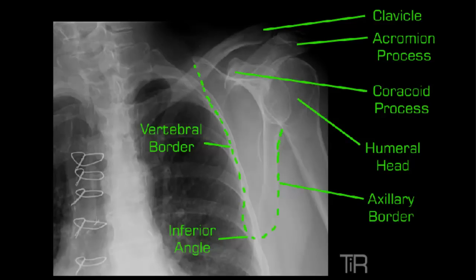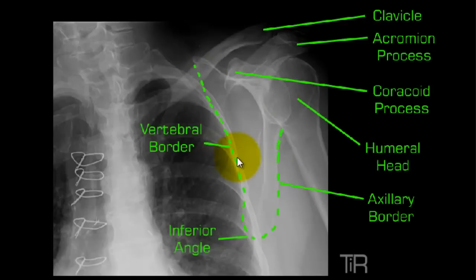I really believe that you need to have a good understanding of the anatomy in both the AP and lateral positions. The three major pieces of anatomy that I'm interested in for determining rotation on our Y-view are the humeral head, the axillary border, and the vertebral border. Those three things alone will tell you if you're rotated or not.